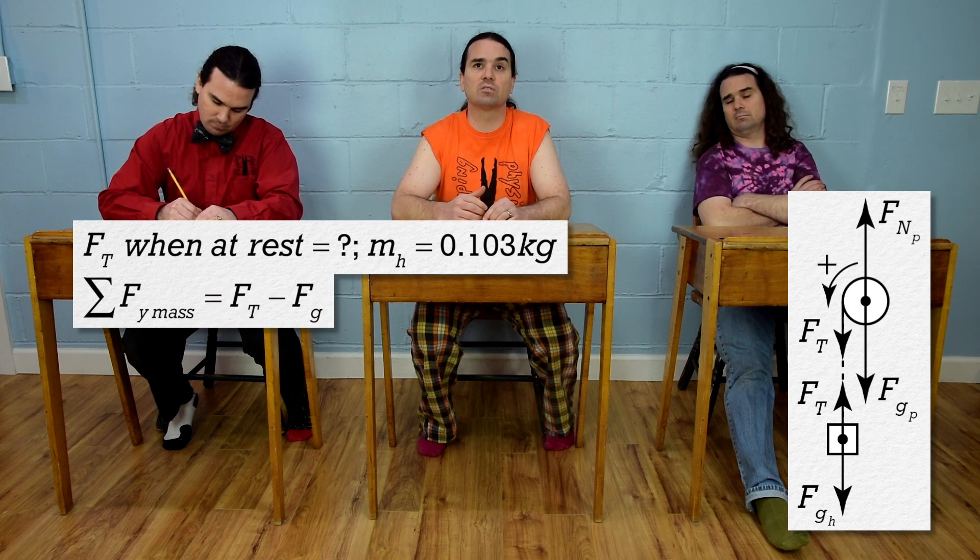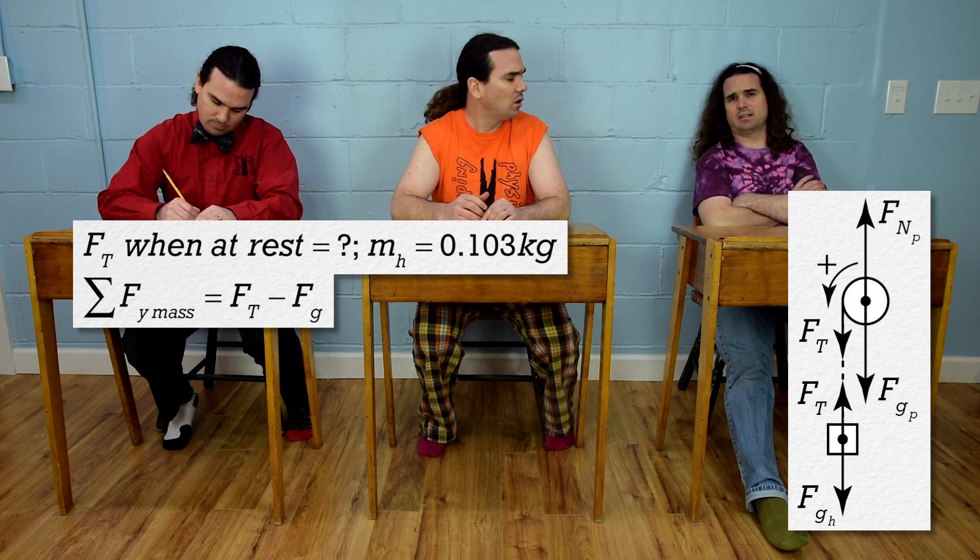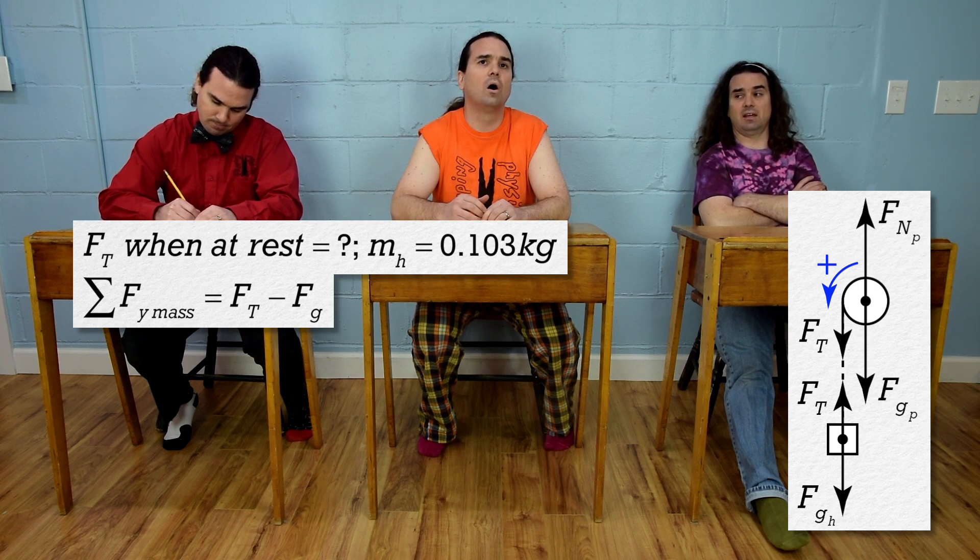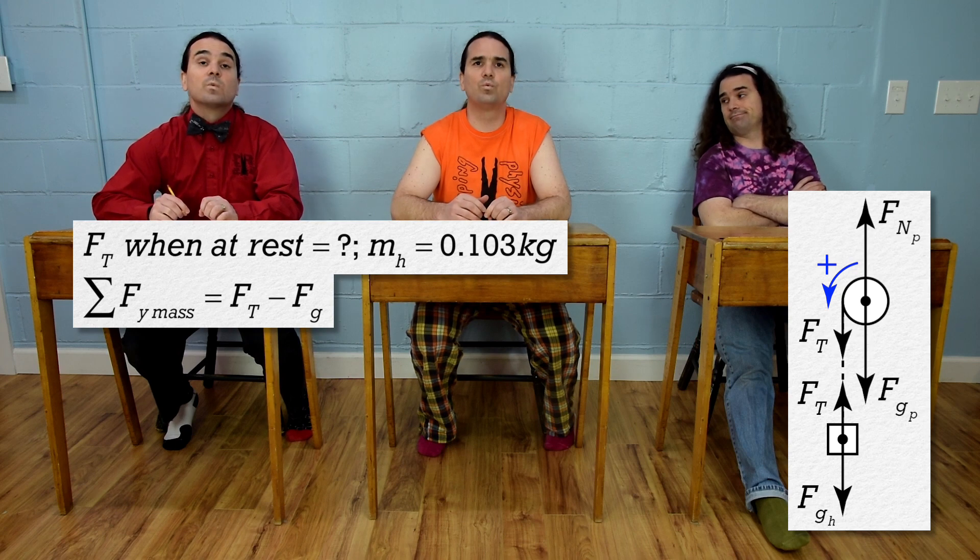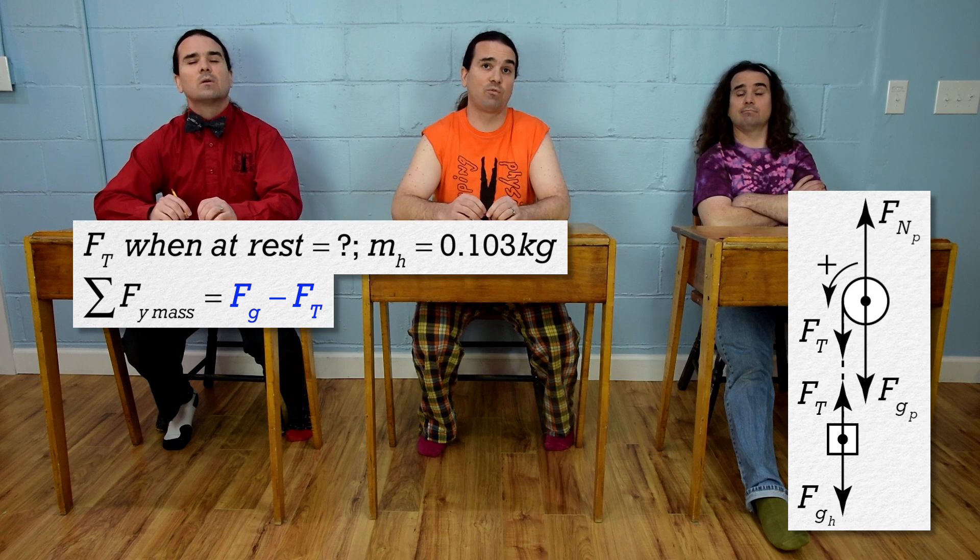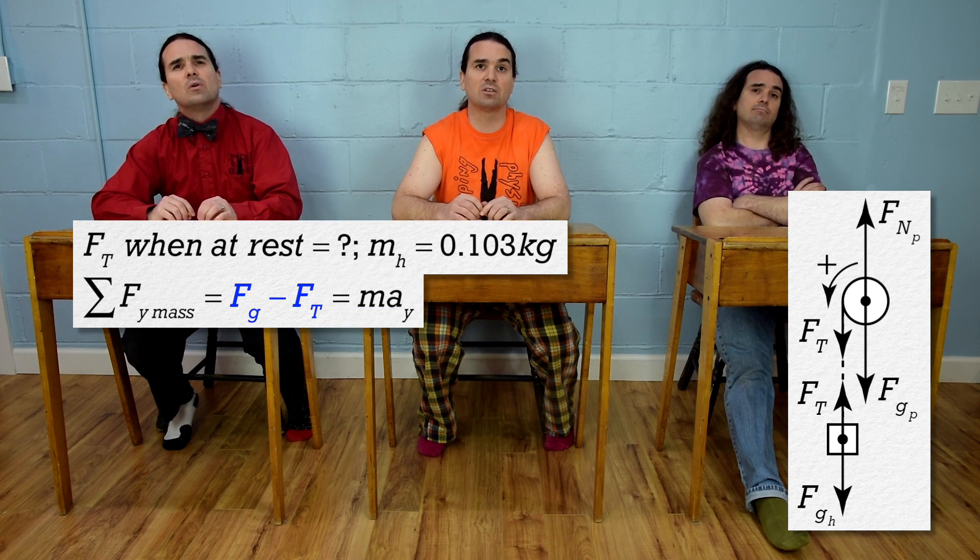Force of tension minus the force of gravity equals... Usually, we defined counterclockwise or out of the board as positive. Therefore, down on that side of the pulley is positive and up is negative. Right, okay, so force of gravity minus force of tension equals mass times acceleration in the y-direction.